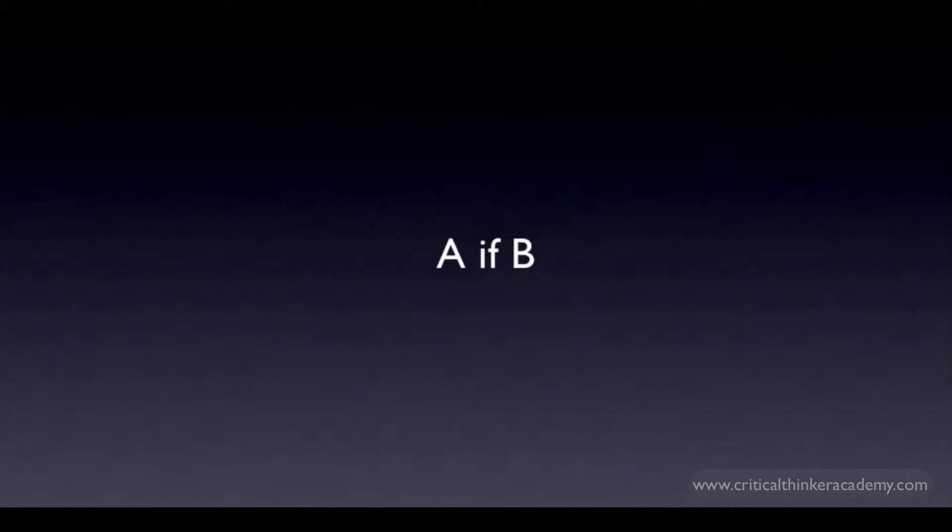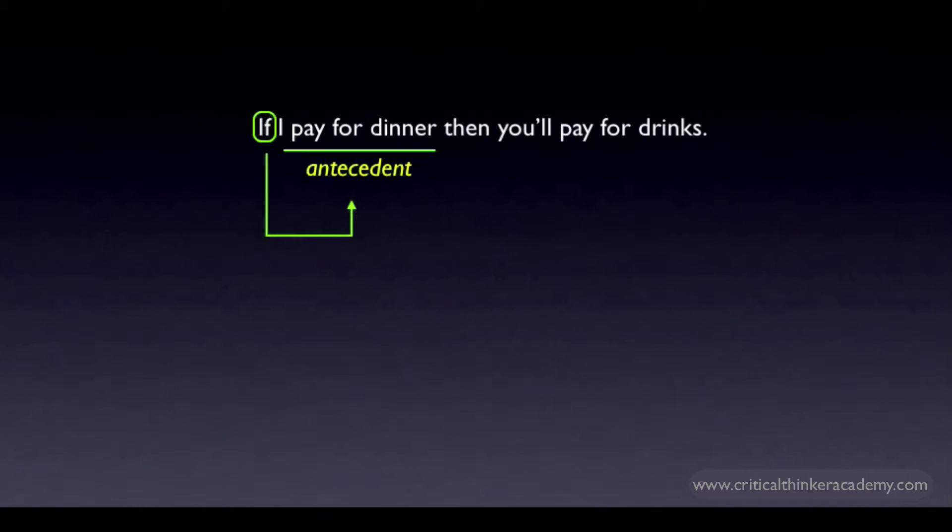We'll start with the form A if B. If I pay for dinner, then you'll pay for drinks. This is written in standard conditional form. The antecedent is I pay for dinner, and the consequent is you'll pay for drinks. The if is what flags the antecedent. In standard form, the antecedent comes immediately after the if.